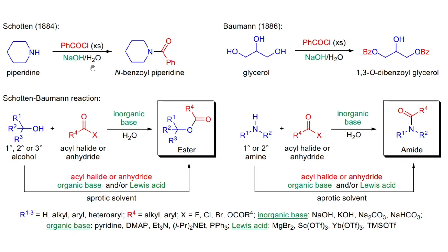The Schotten-Baumann reaction is a chemical reaction used to synthesize amides from amines and acyl chlorides. It is widely used in organic synthesis for the preparation of amides due to its straightforwardness and efficiency.